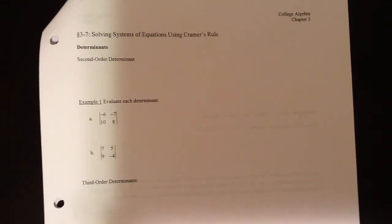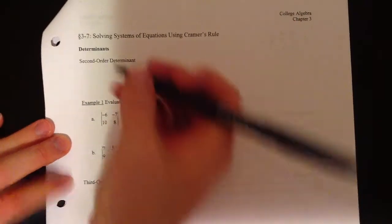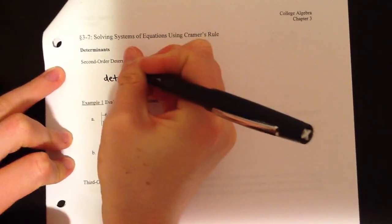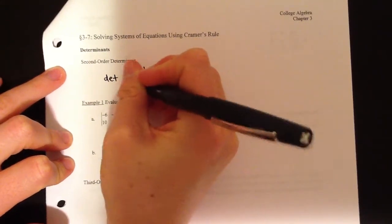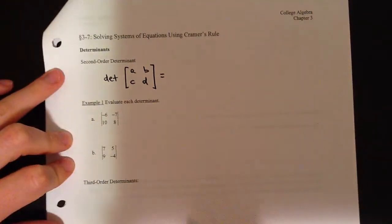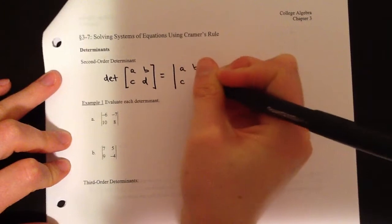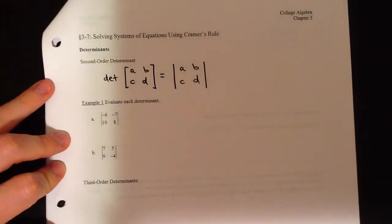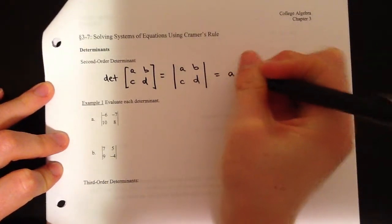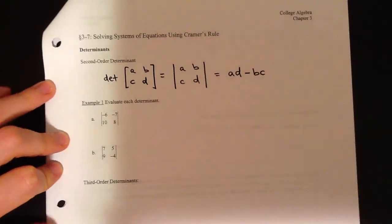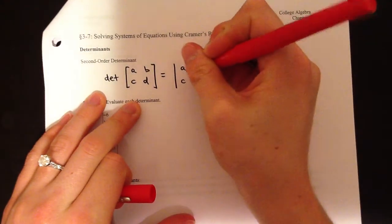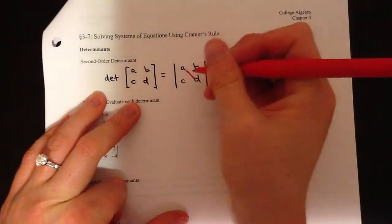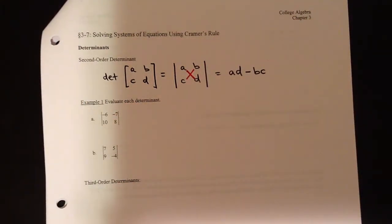Determinants are basically just a formula to get a single number out of a matrix. A second order determinant comes from a two-by-two matrix. To get the determinant of a two-by-two matrix with elements A, B, C, and D — represented by two parallel lines — you multiply A times D and then subtract B times C. So you're multiplying down the diagonal and then subtracting the upward diagonal. It's basically a cross-multiply-and-subtract formula.